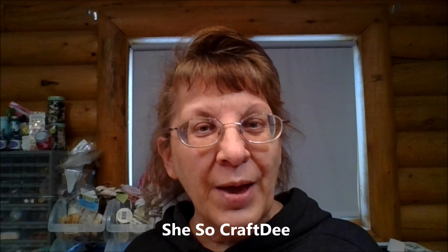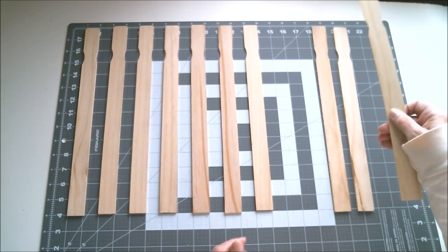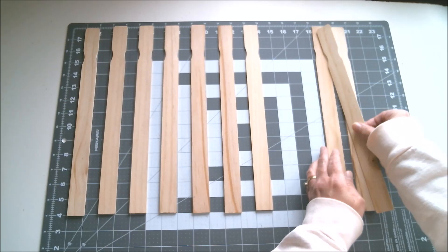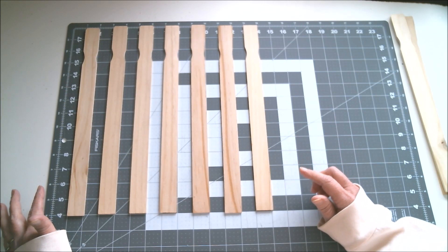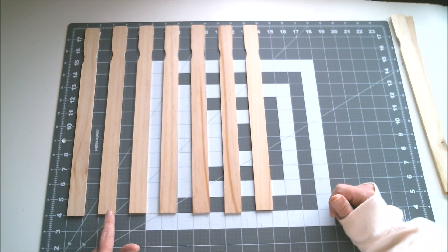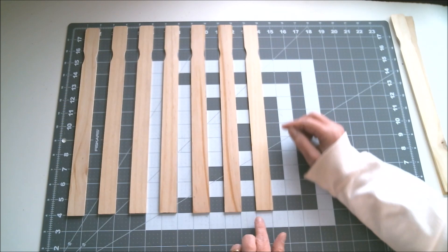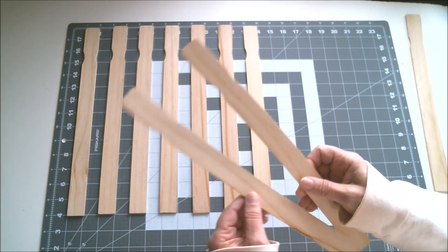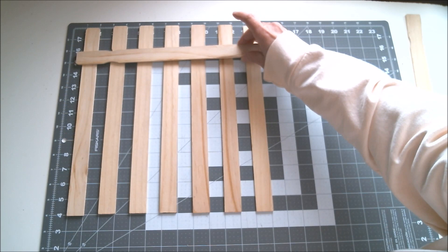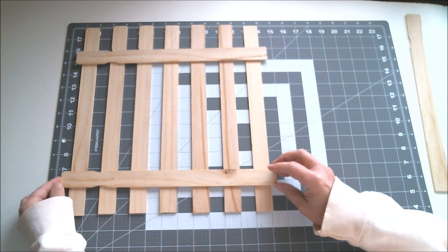For this project you are going to need 10 of these one gallon paint sticks. We're going to set these three aside and you're going to line up these seven one inch apart, so these are like one inch wide and then a one inch space in between. You're going to do that all the way across making sure that they are lined up evenly. Once you do that we're going to take two of these and adhere them right about there and right about there.